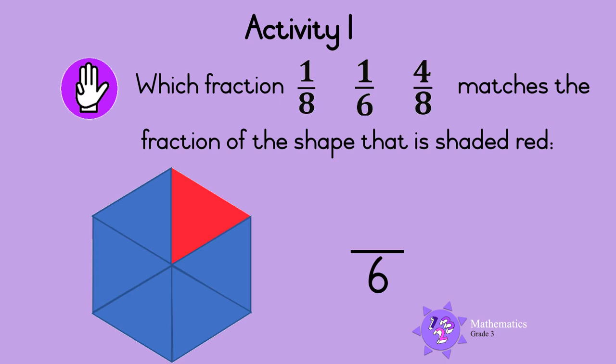Now how many parts are shaded red? Let's count. 1. So only 1 of the 6 parts is red. We write the 1 at the top of the fraction like this. So this fraction is 1 sixth. Say the fraction with me: 1 sixth. So this is the fraction that matches the fraction of the shape that is shaded.